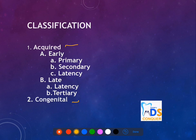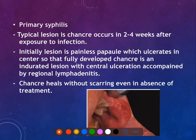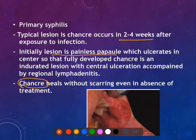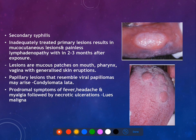The classification of syphilis includes acquired and congenital types. Acquired syphilis has primary, secondary, a latency period, and tertiary stages. The most important characteristic feature of primary syphilis is the chancre, which occurs two to four weeks after exposure. The chancre begins as a painless papule, undergoes ulceration, and is associated with regional lymphadenitis.